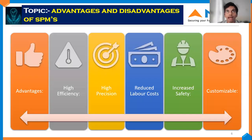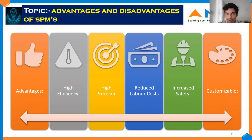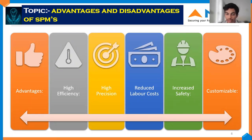As you know, there are advantages and disadvantages for everything, and even for SPM machines. The advantages of an SPM machine are: it is highly efficient and the precision of the machine is very high, labor cost can be drastically reduced, the safety of the worker is increased, and it is highly customizable.